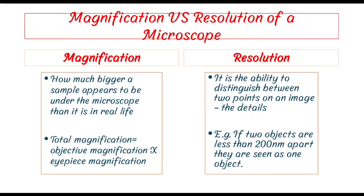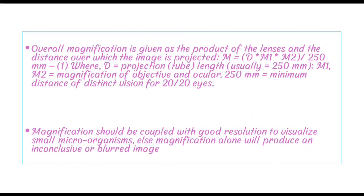How do we calculate the total magnification? Objective magnification multiplied by eyepiece magnification gives the magnification product. We then multiply the product by distance — the distance over which the image is projected.